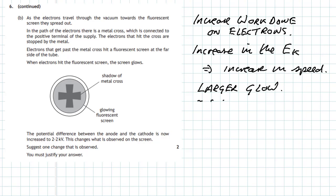The other thing that happens is that the shadow of the metal cross becomes much sharper. That's simply because you've got a much higher potential difference.